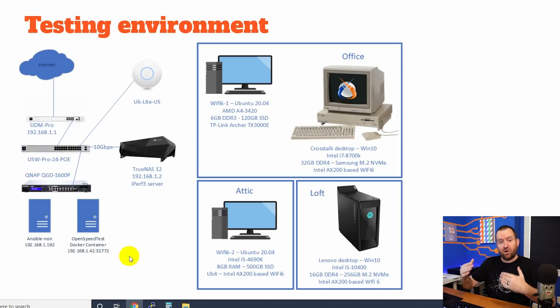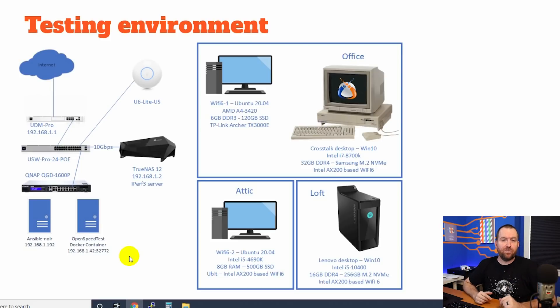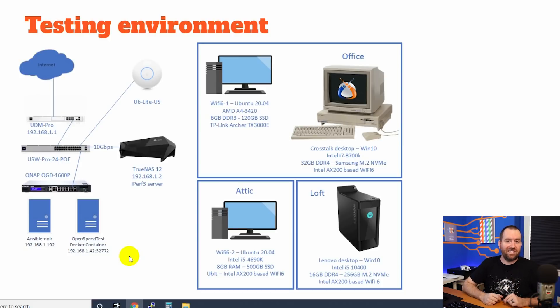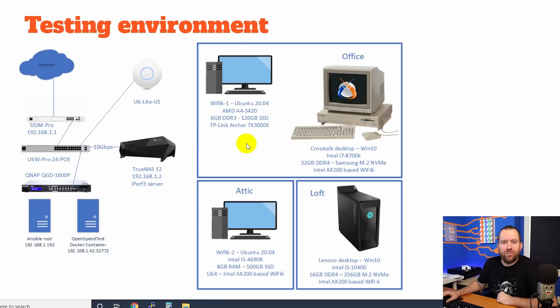I started that download, waited about two or three minutes for everything to level out, then took an average measurement over about a minute's worth of time, and took the average among all four clients to distill that down into a single megabits per second. For our test clients, we have a wide range of operating systems and system specifications. We have one Ubuntu 20.04 machine with an old-school AMD A4-3420, and my personal desktop running Windows 10 with an Intel i7-8700K.